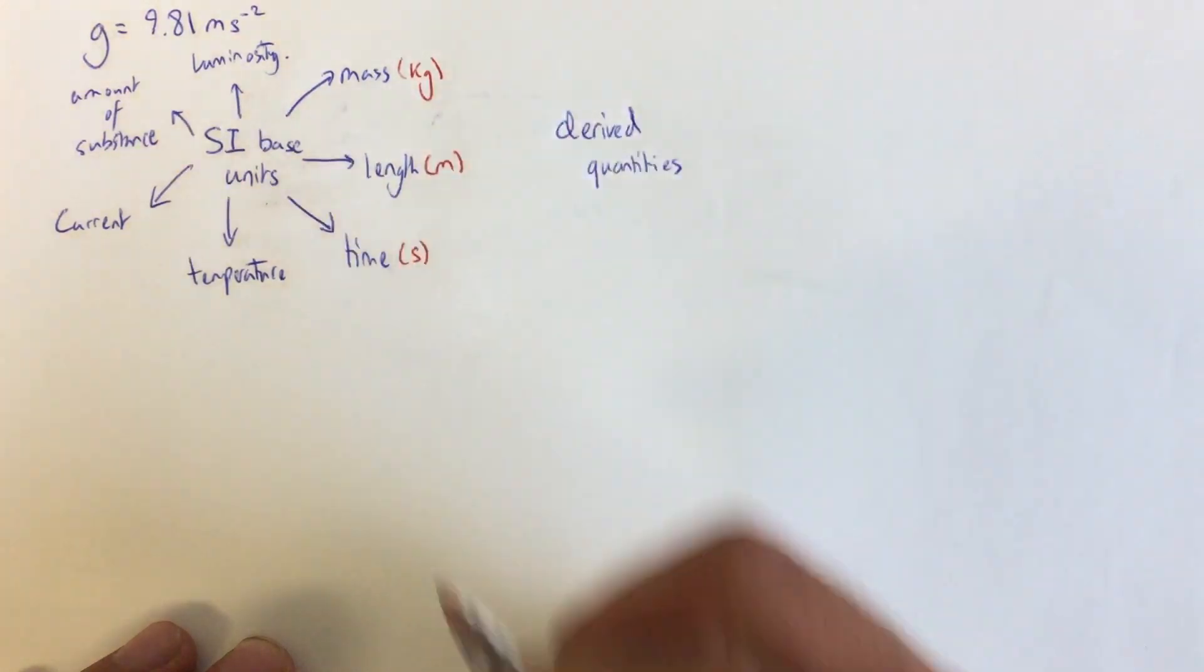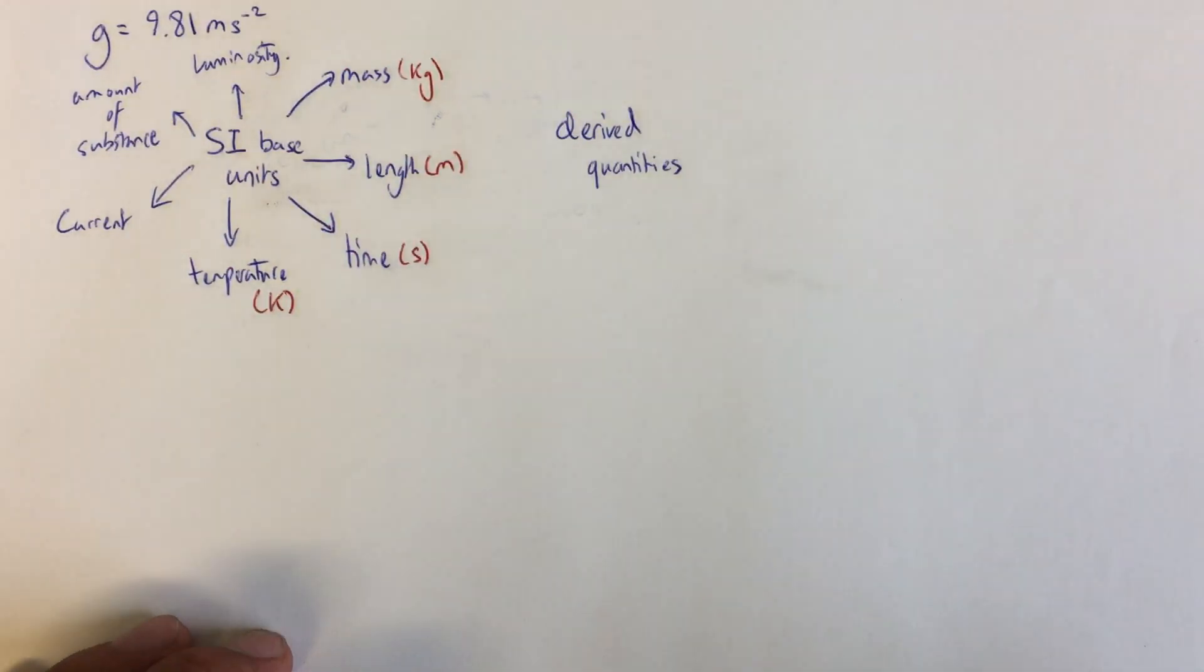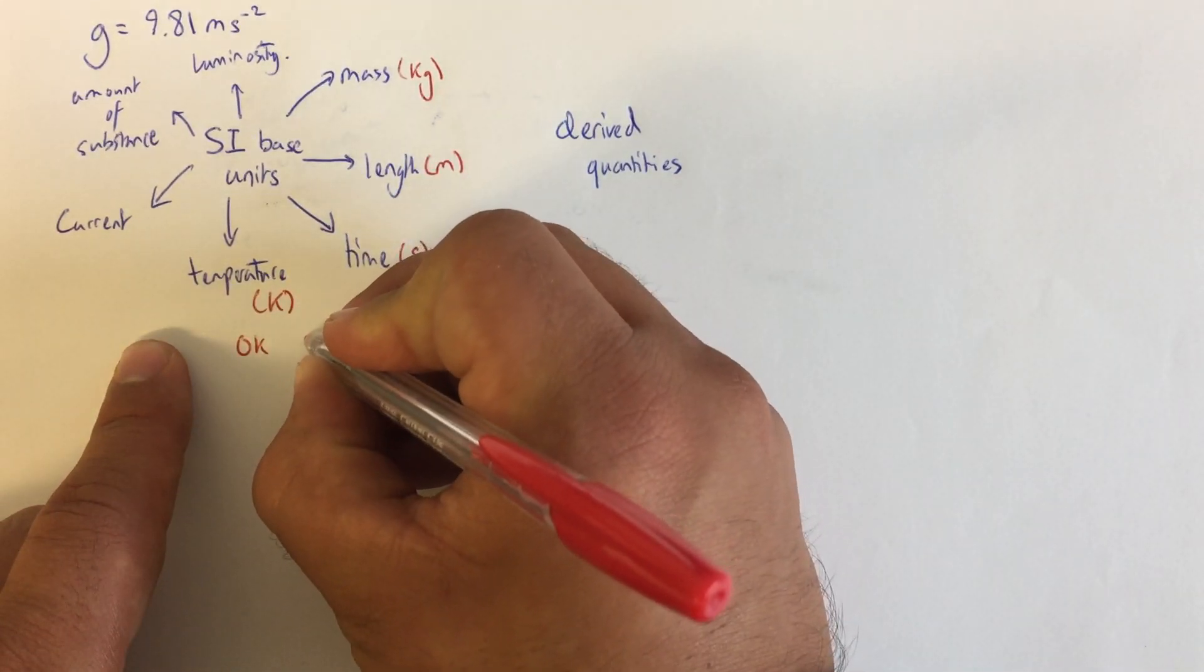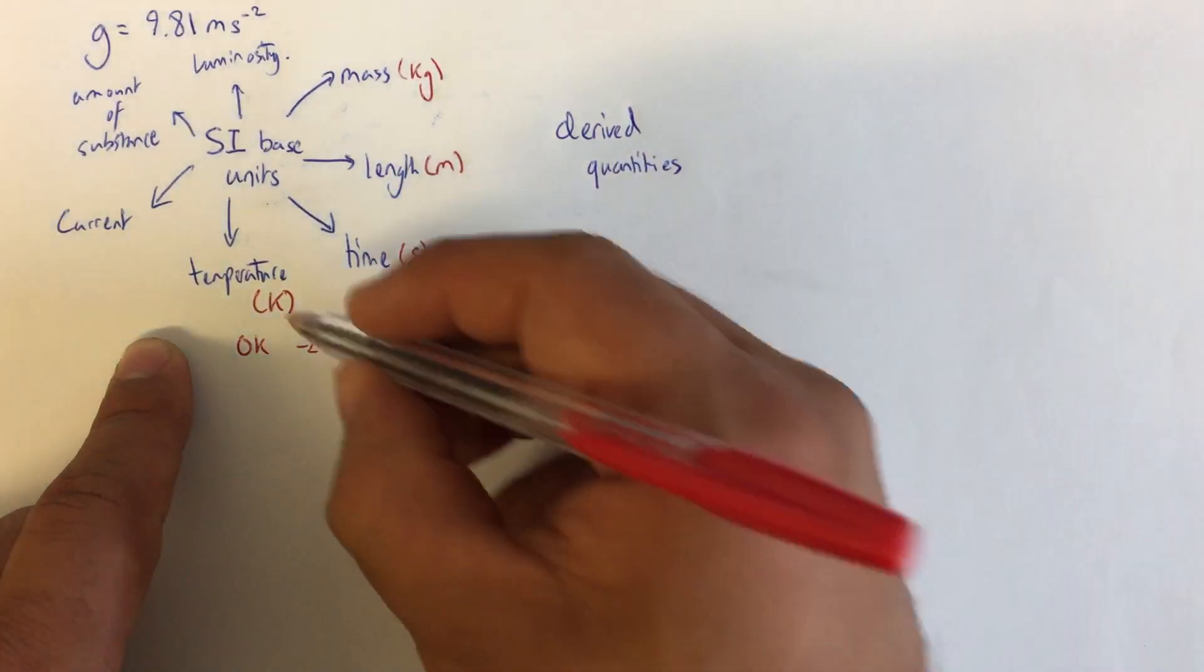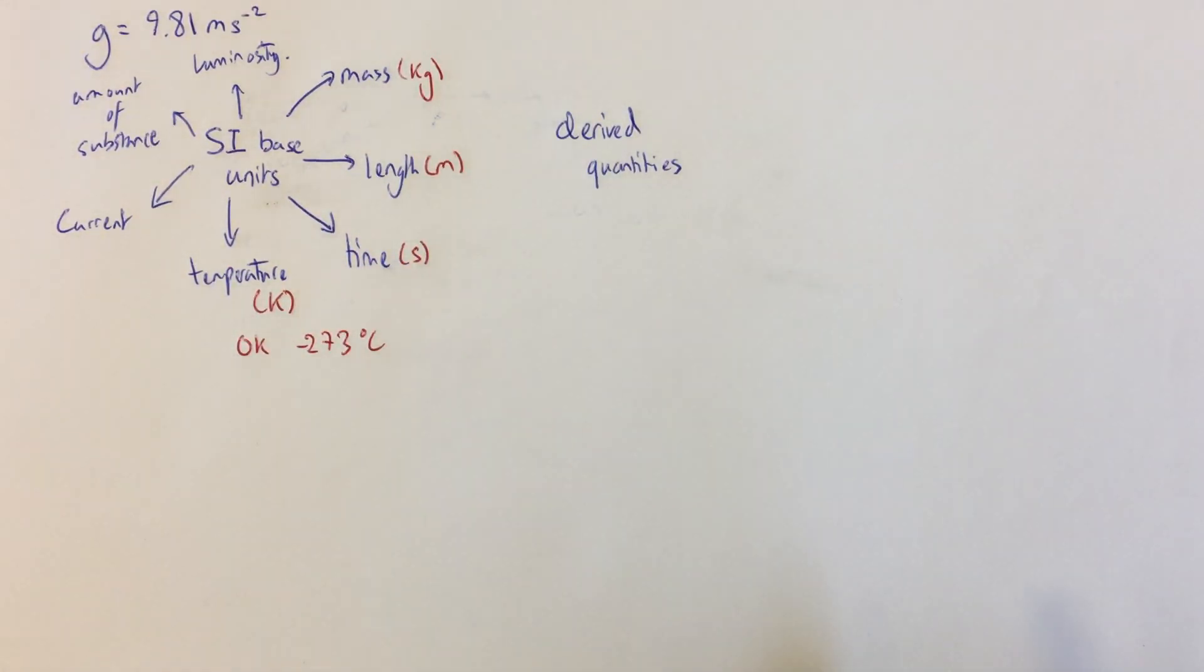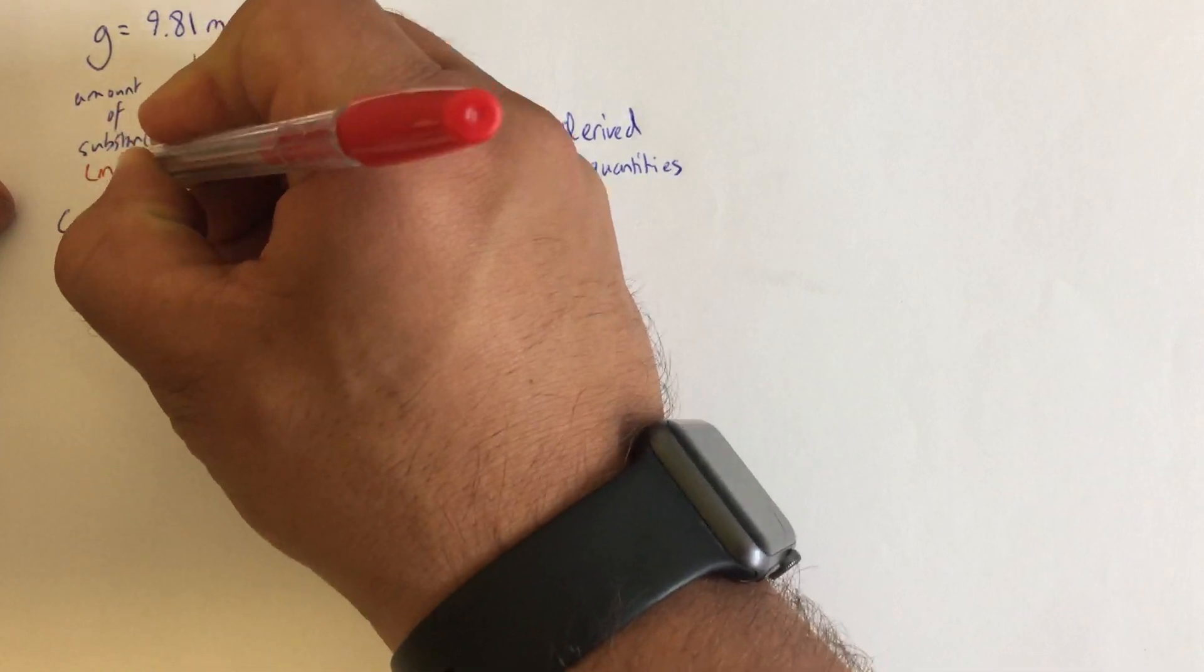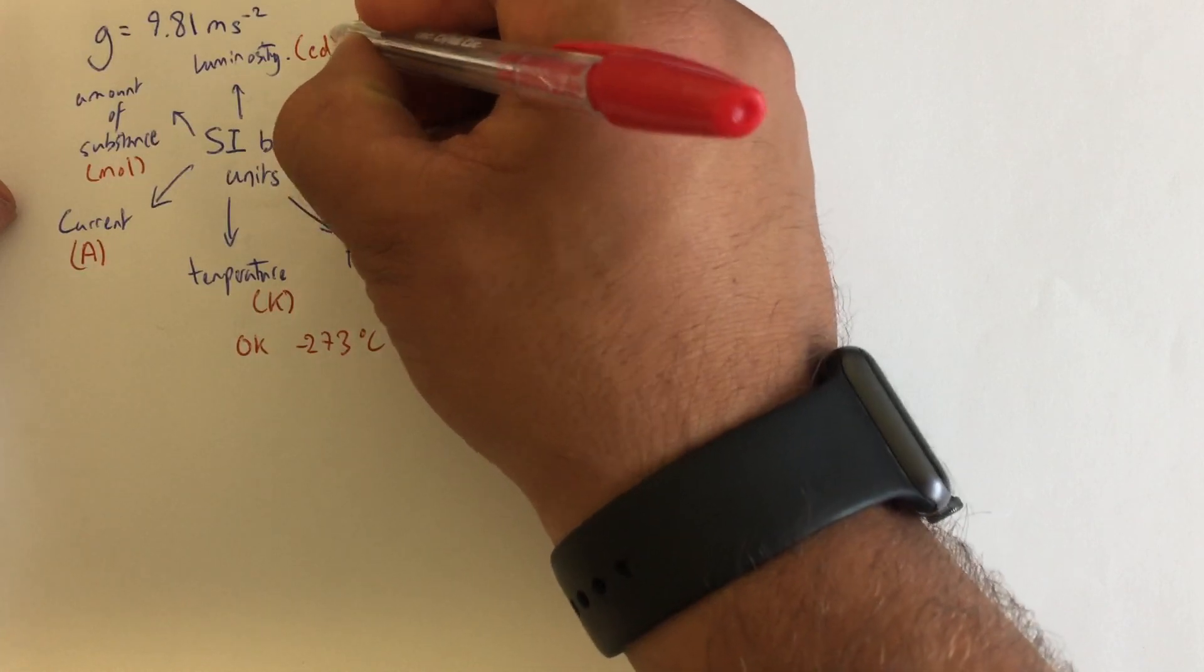Time is always in seconds rather than minutes or hours. Temperature, or specifically absolute temperature, is measured in Kelvin, which is a capital K. Zero Kelvin corresponds to minus 273 degrees C. So if I want to go from Kelvin to degree C, I minus it, and if I want to go from degree C to Kelvin, I add 273. Electrical current is measured in amperes, amount of substance is measured in moles, and luminosity is measured in candelas.